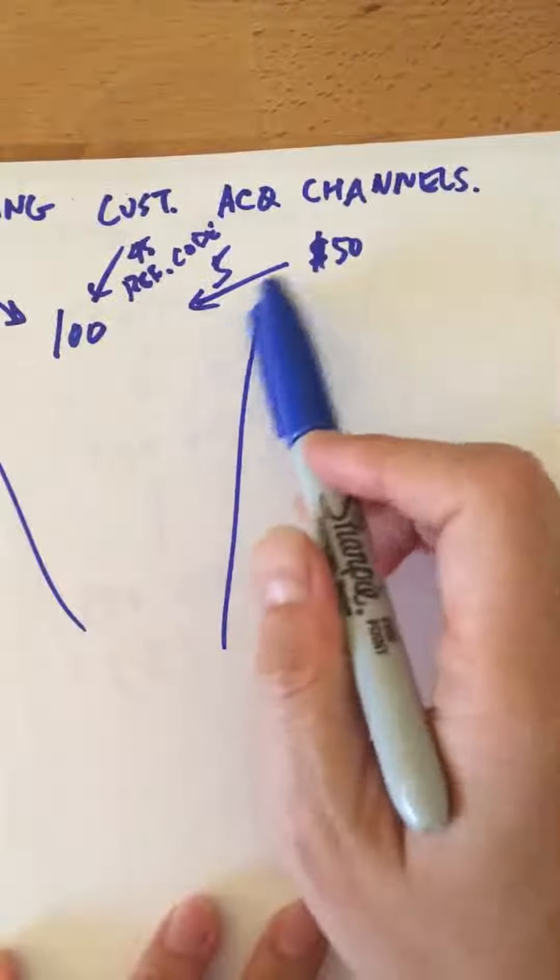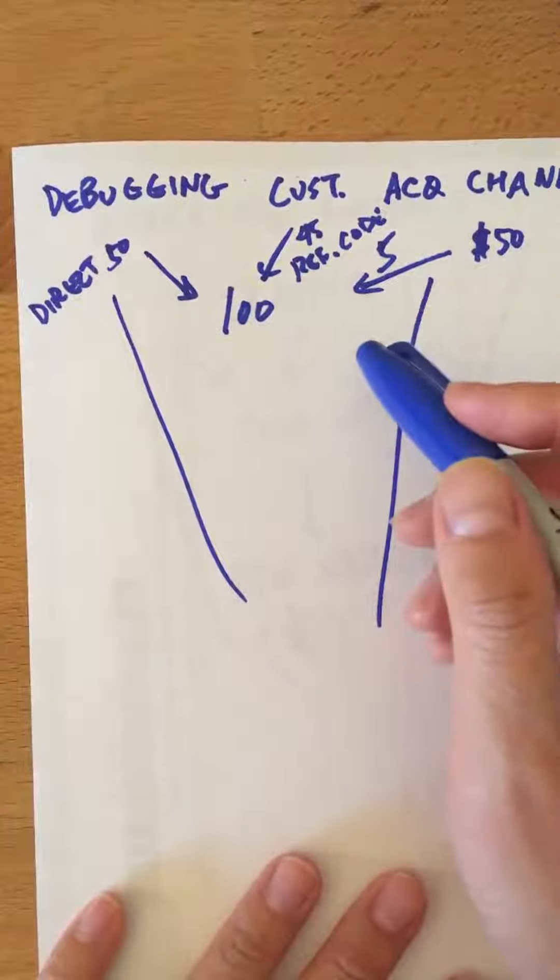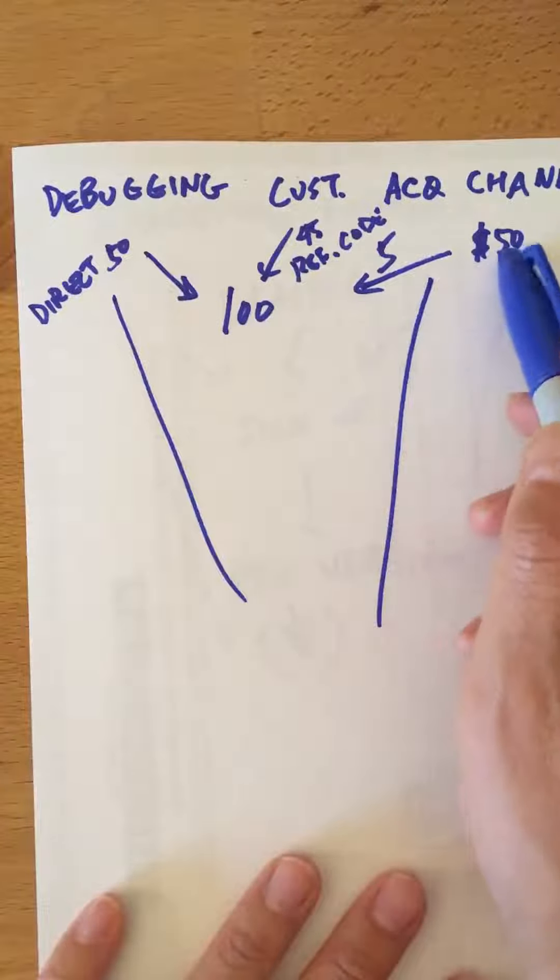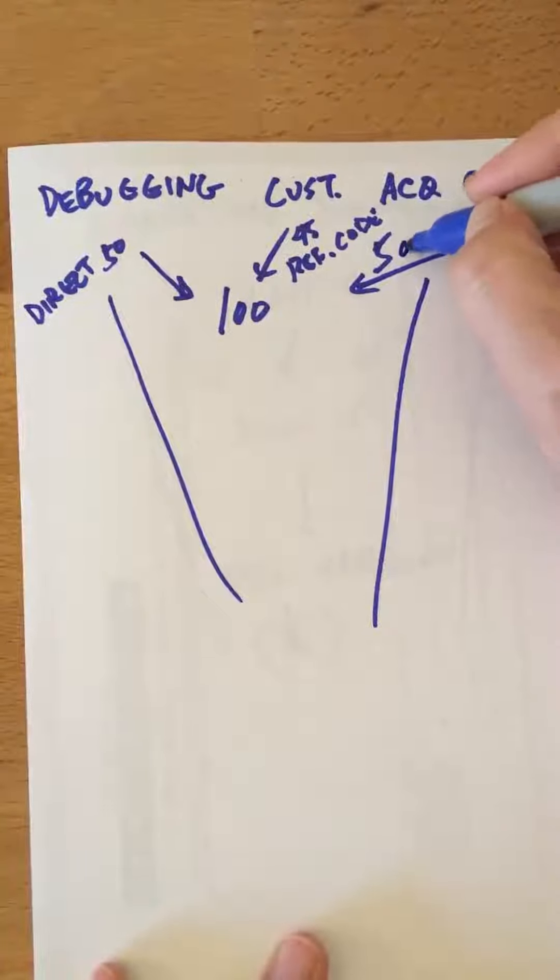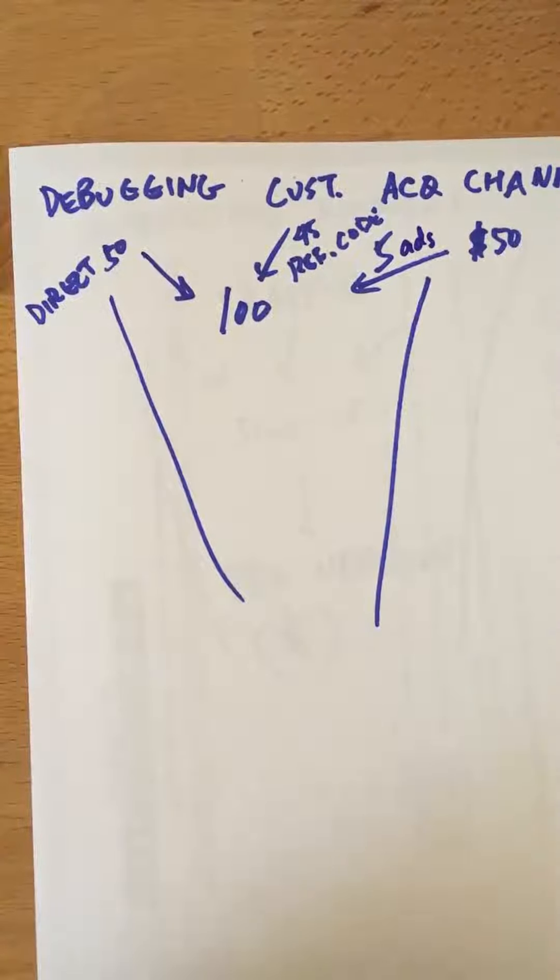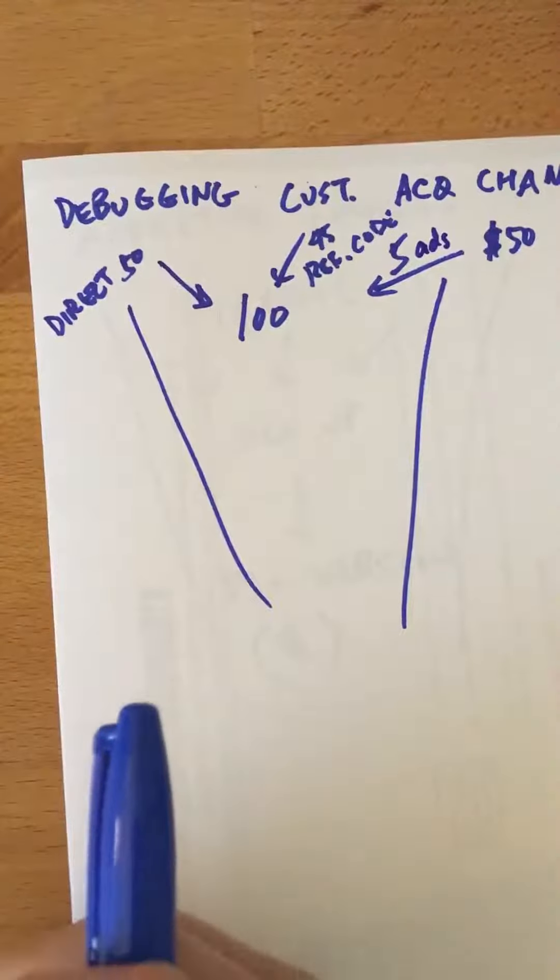I've listed here some customer acquisition channels. We have our 100 people coming to our website and we've spent $50, let's just say on five people coming in through maybe ads, and then let's say that we have another 50 that just come direct. We don't really know where they're coming from.